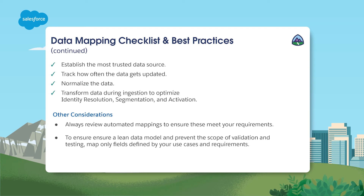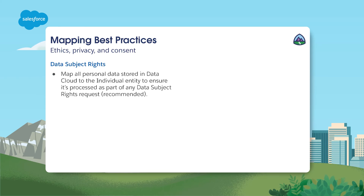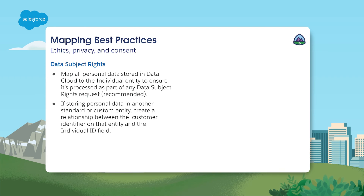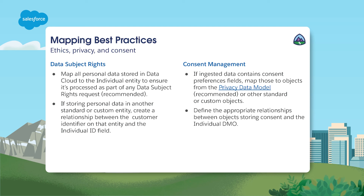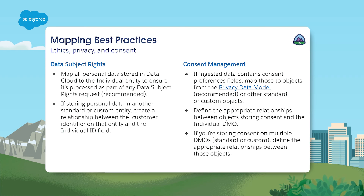Now let's zoom in on data mapping best practices that support ethics, privacy, and consent. For data subject rights, map all personal data stored in Data Cloud to the individual object to ensure it's processed as part of any data subject's rights request. If storing personal data in another standard or custom object, create a relationship between the customer identifier on that object and the individual ID field. For consent management, if ingested data contains consent preference fields, map those to objects from the privacy data model or other standard or custom objects. Define appropriate relationships between objects storing consent and the individual data model object, or DMO. If you're storing consent on multiple DMOs — standard or custom — define the appropriate relationships between those objects.